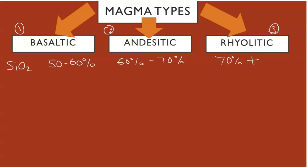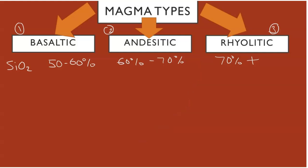There is a fourth type called dacite. This fits in between andesitic and rhyolitic, at around 65 percent silica content by weight.